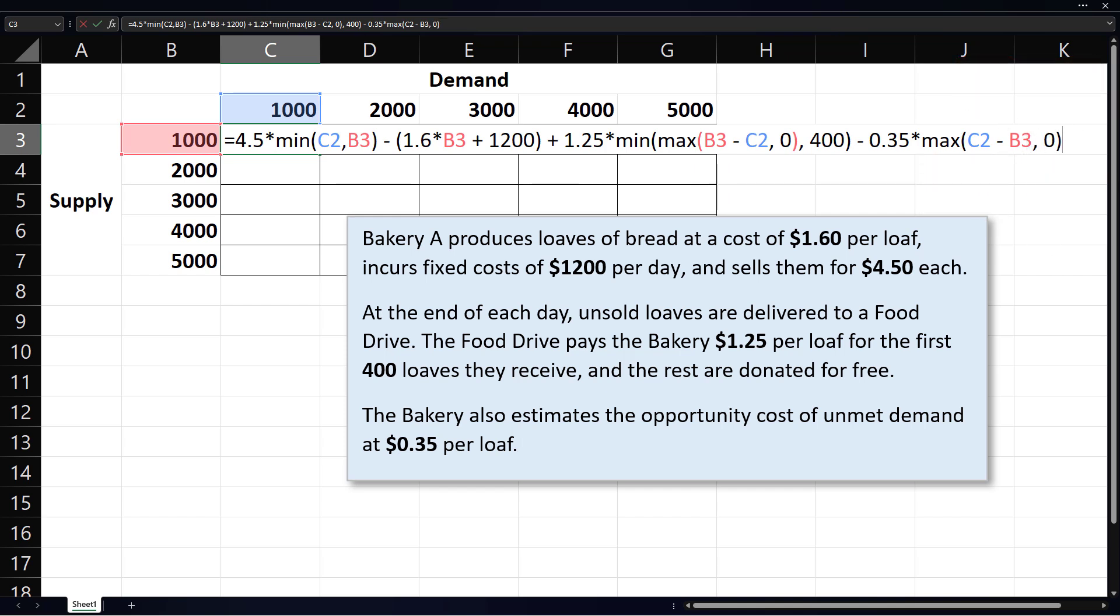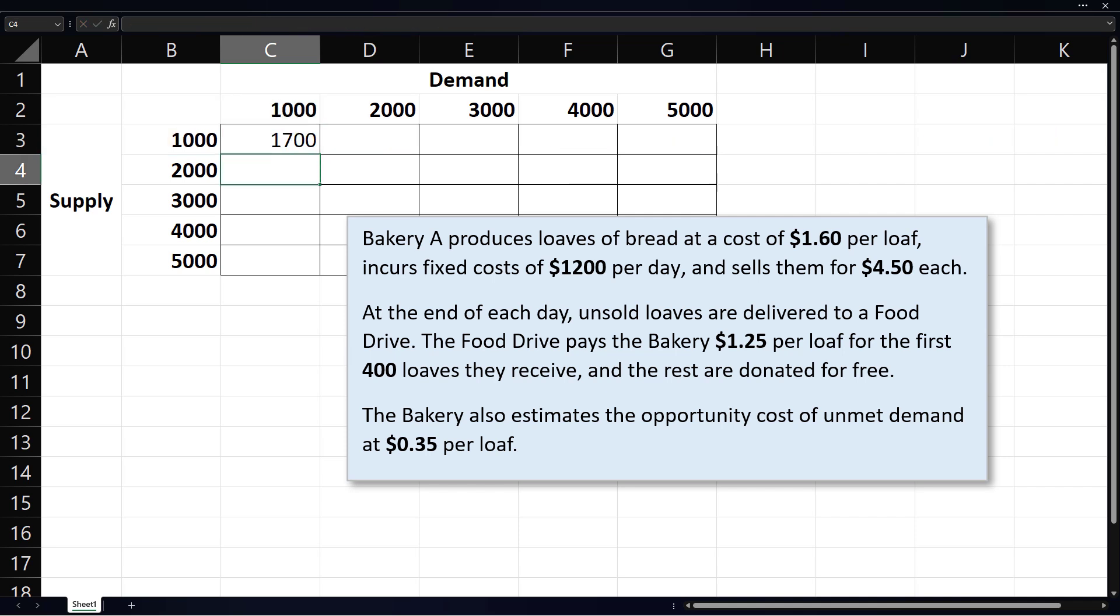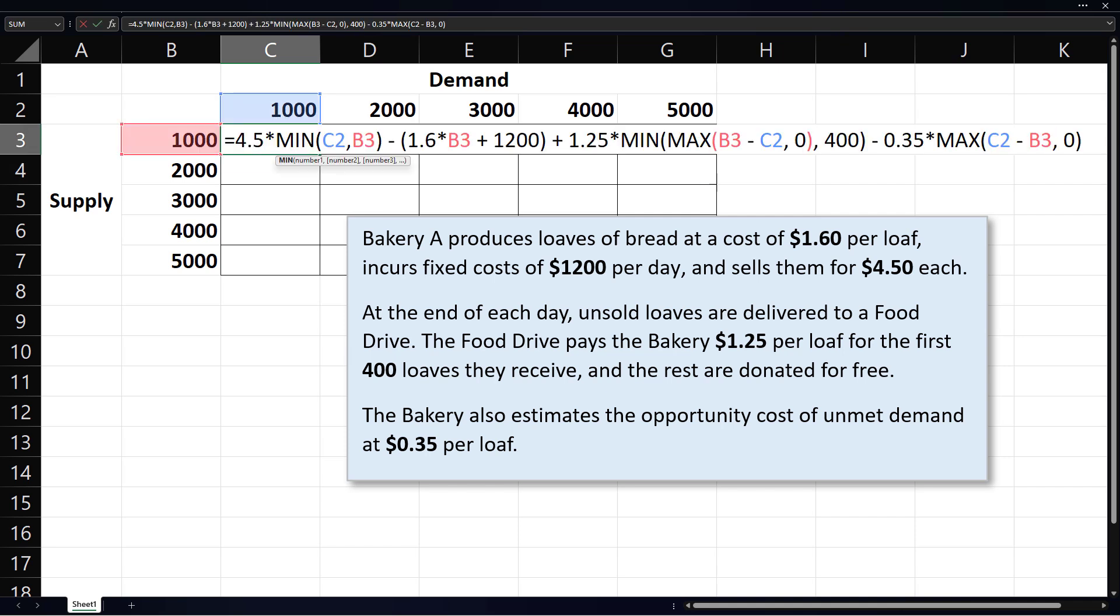The setup is now complete for the first cell. Now to copy the formula successfully to other cells, we need to lock down some rows and columns. Since the supply amounts are in column B, we will make column B absolute by placing a dollar sign before the B's in the formula.